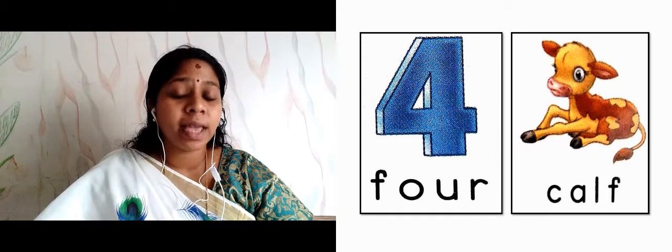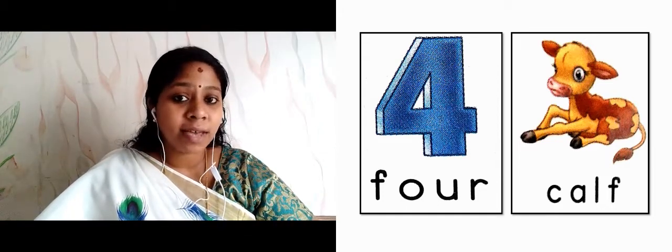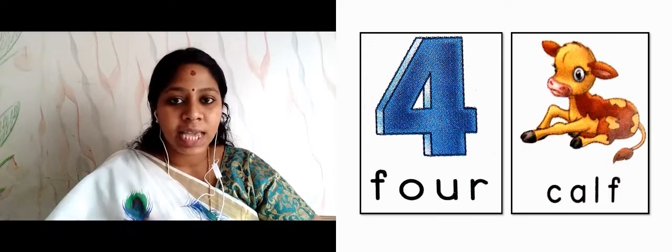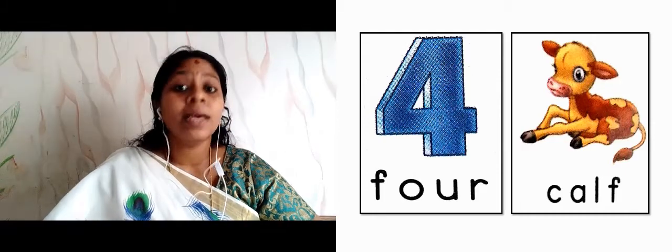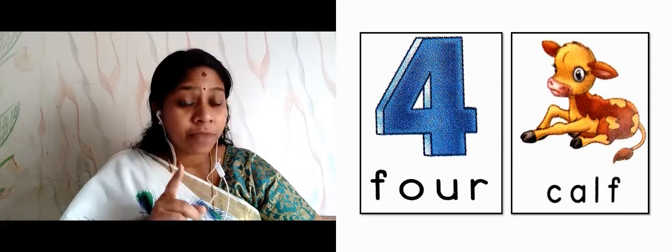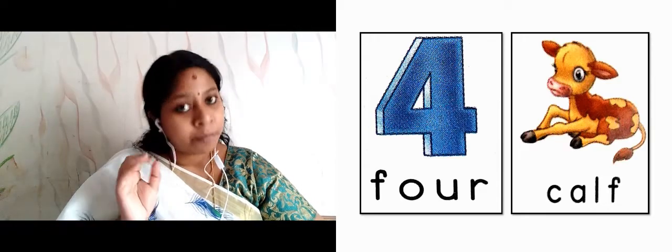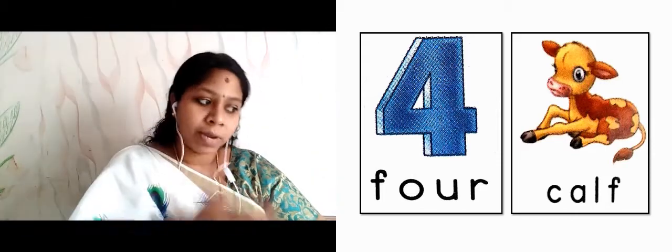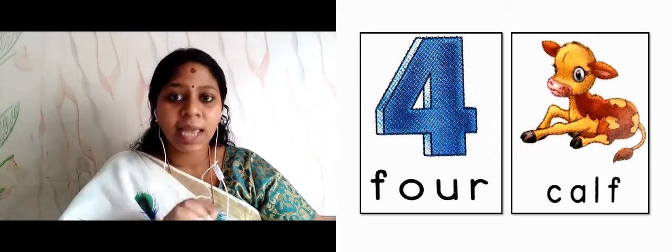Next slide is showing four — F-O-U-R. Four, the number. Where is the letter F coming? The first letter itself is F — F-O-U-R. Next is calf — C-A-L-F. We call a baby cow a calf. Also if you remember the elephant story, we also call a baby elephant a calf — C-A-L-F.